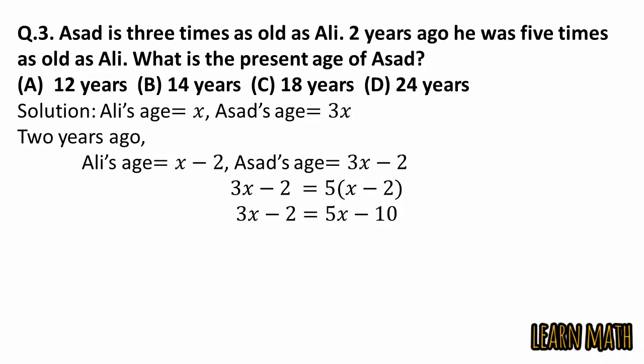So 3X minus 2 is equal to 5 into X minus 2. Simplify this, we will get 5X minus 3X is equal to 10 minus 2. Simplify, we will get 2X is equal to 8 and X is equal to 4. But this is Ali's age. In the question we have to find Asad's age, so that is equal to 3X, and 3 into 4 is equal to 12.